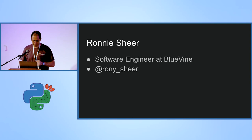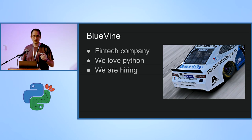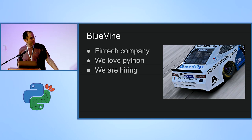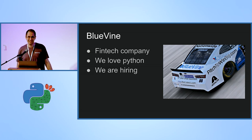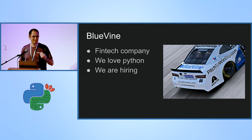My name is Ronnie Scheer, software engineer at Bluevine. Bluevine is a fintech company. We love Python and we're hiring — come speak to me or one of my co-workers. Recently, thanks to our partnership with Nationwide, we've been featured on the back of a NASCAR racer. This is absolutely real. I'm telling you this because once you're featured on the back of a NASCAR racer, your app cannot run slow — because it's ironic.